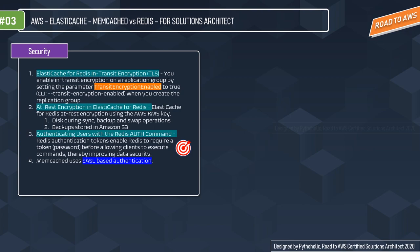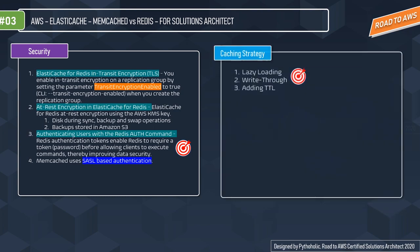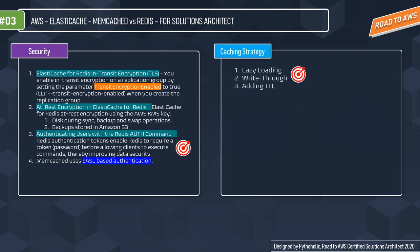For Memcached, it uses SASL-based security authentication — Simple Authentication Security Layer. There are three caching strategies for ElastiCache: lazy loading, write-through, and adding TTL. These are really important so please pay attention.